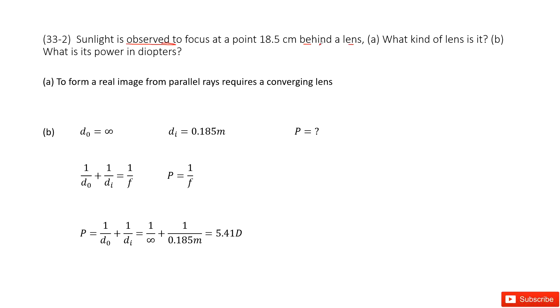See, in this case, the image is at another side of this lens. So this is a converging lens, and it can be observed, which means it's a real image.